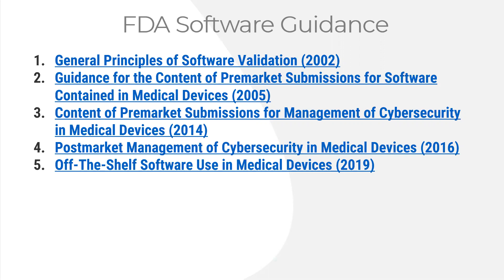The first guidance document is General Principles of Software Validation, a 2002 document. Much of its content is repeated in the second guidance document from 2005, which covers the content of pre-market submissions for software contained in medical devices. Whether you have a device with hardware and software or you have software as a medical device, this is what the FDA wants to see when you submit a pre-market notification or 510(k) submission.